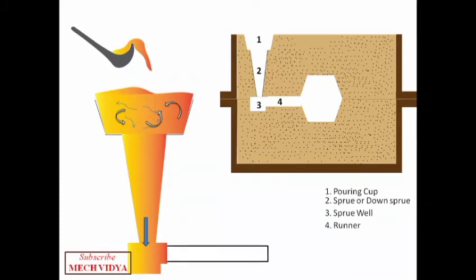In the runner, the flow should be very laminar because any kind of turbulent flow will erode the sand particles from the inner walls and take these particles inside the mold cavity. Finally, the molten metal will reach the mold cavity through this runner.